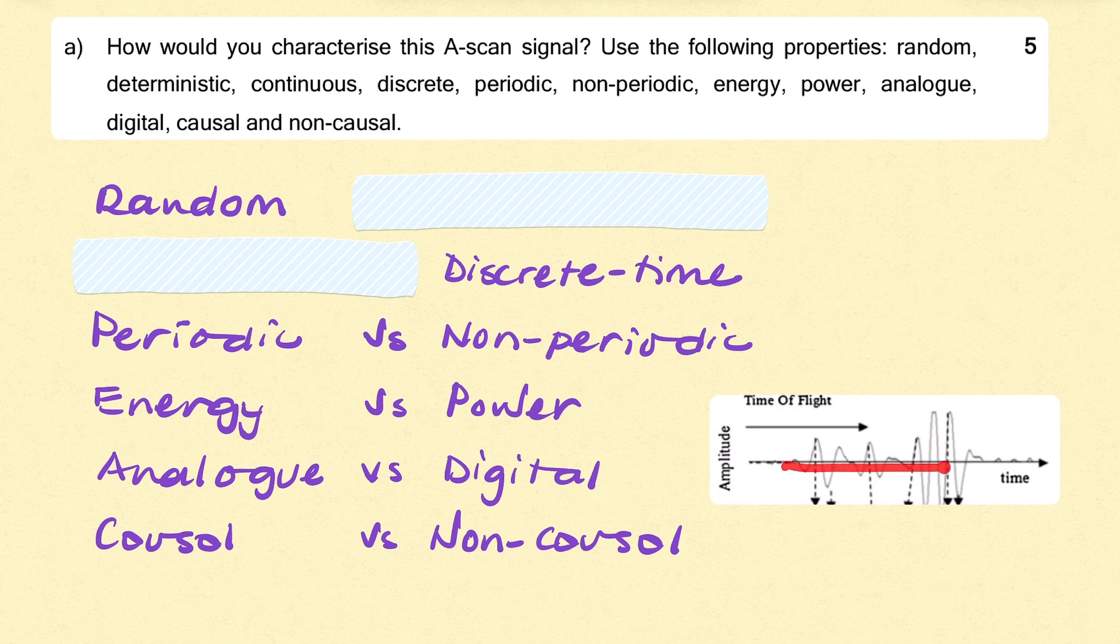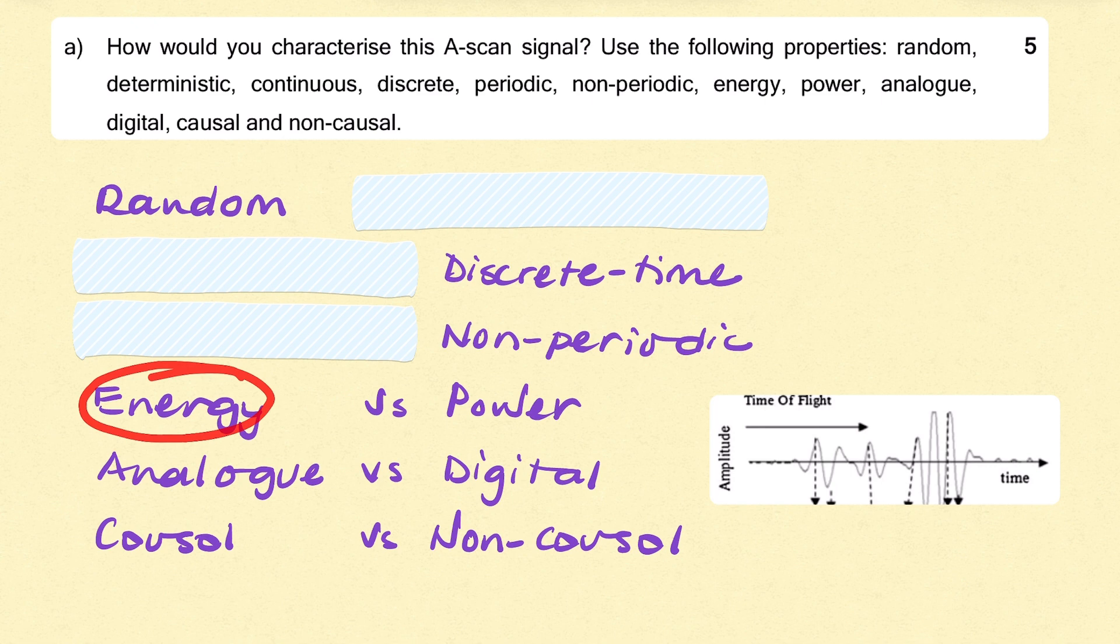Is it periodic? Does it look like it's repeating itself every so many seconds? No. So it's a non-periodic signal. Now, is it an energy signal or a power signal? Remember, an energy signal has finite energy and zero average power, whereas a power signal has infinite energy but finite power. Here it looks like the signal starts from zero and eventually fades into zero, and it's non-zero for a finite duration. So we call that an energy signal.